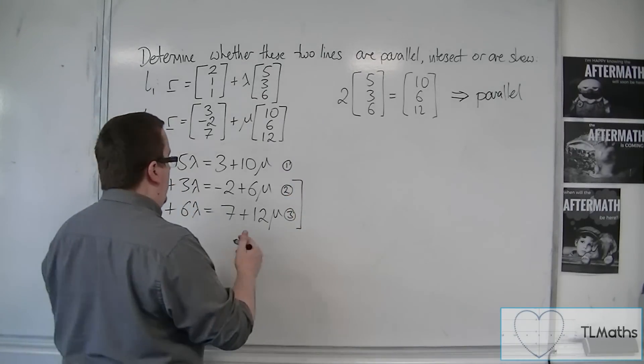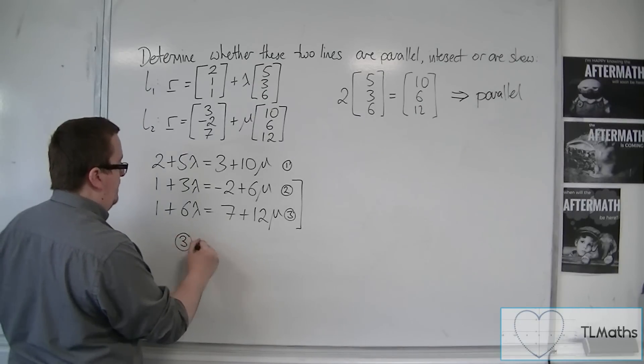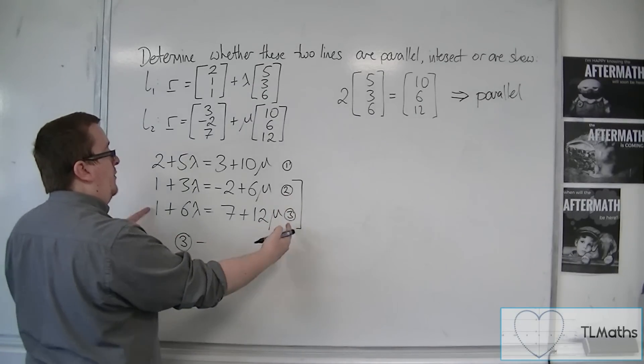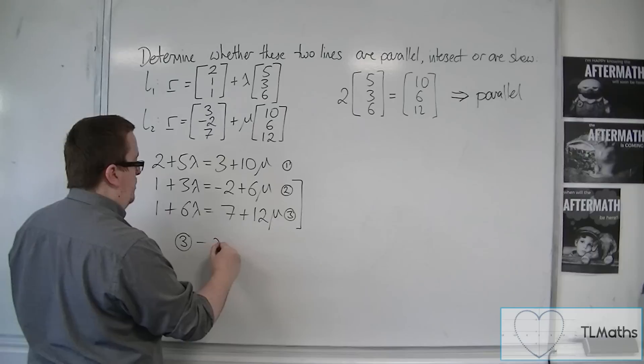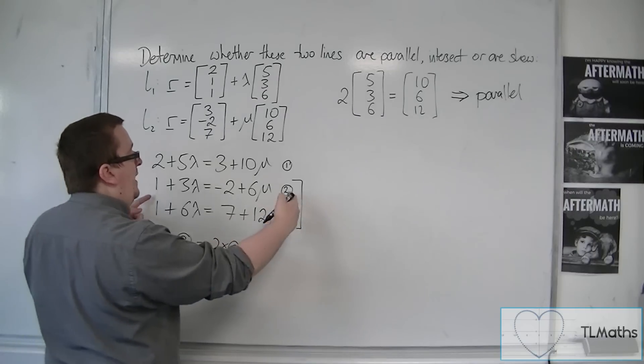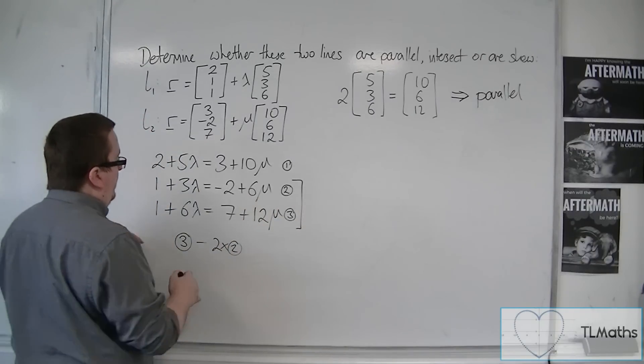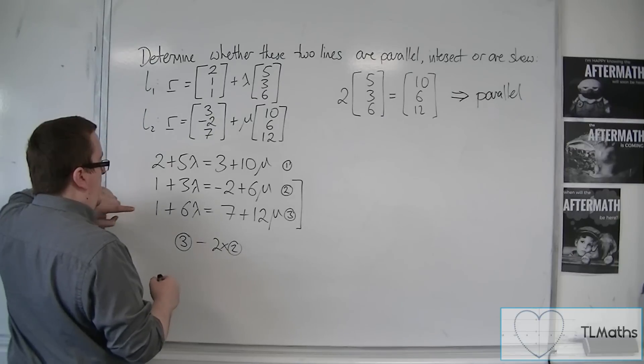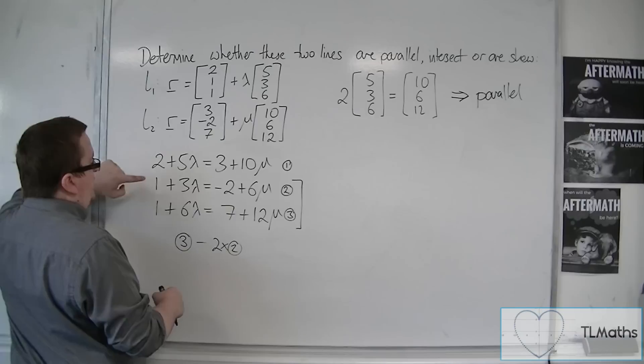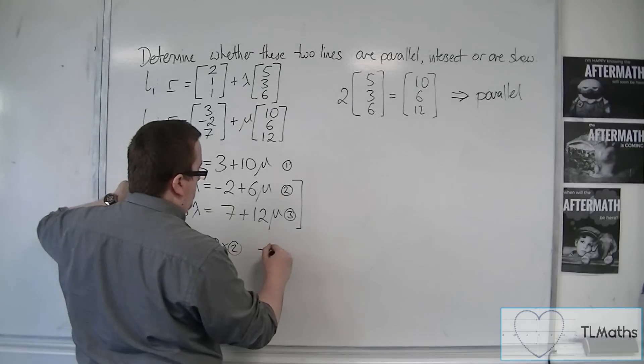Because what I can see is that if I do equation 3, take away two lots of equation 2, then I'll be able to eliminate the mu's, for example. But subsequently what happens is that we're going to have 1, take away two lots of 1. So that'd be minus 1.